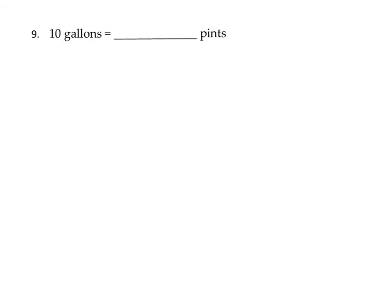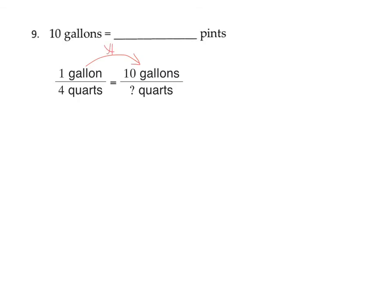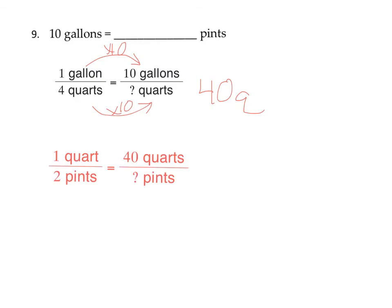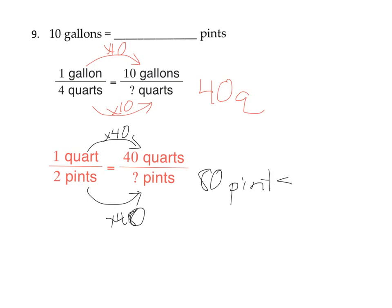Number nine: we're changing 10 gallons into pints. First, 1 gallon equals 4 quarts. Writing the proportion, we can see this is multiplying by 10, so 4 times 10 is 40 quarts. Then we need another proportion: 1 quart equals 2 pints. Multiplying by 40: 2 times 40 gives 80 pints. Our final answer is 80 pints in 10 gallons.